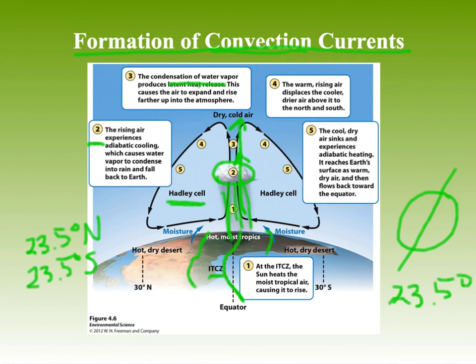As the warm air goes further into the atmosphere, it displaces cooler, drier air. That cooler, drier air is going to move either south or north. And because cooler air is more dense, it's going to sink down on either side of the equator.